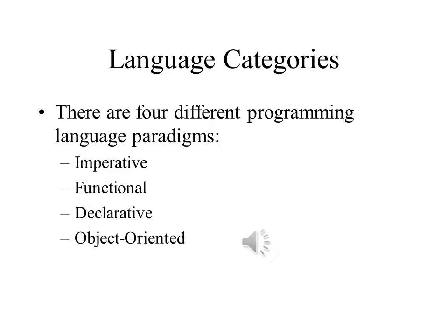Programming languages are most commonly broken down into four different paradigms: imperative languages, which tell the computer how to perform a task; functional languages, which write algorithms as function definitions; declarative languages, which specify a set of declarations; and object-oriented languages, which allow for the creation and use of classes of objects.